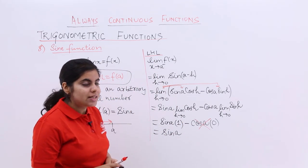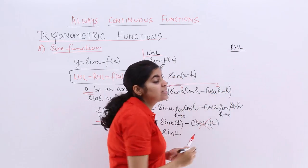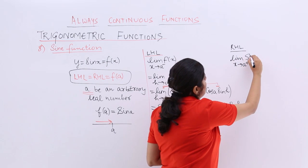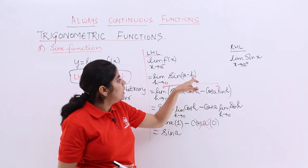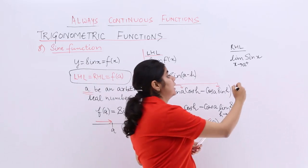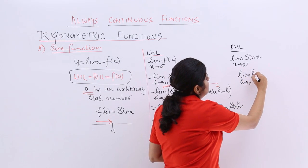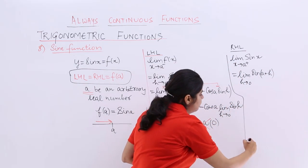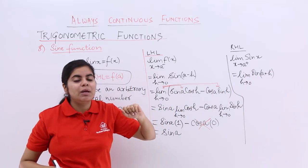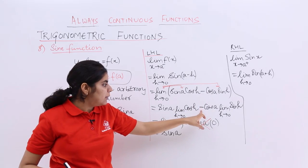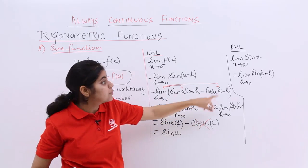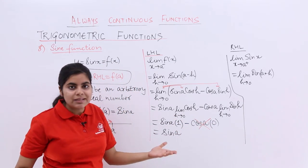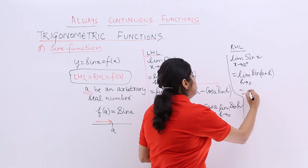So RHL would go the same. I'm not doing all the steps, I'm just telling you in RHL what will happen: limit x tends to a positive sine x, and then wherever you had sine(a minus h), you will be writing sine(a plus h). Now sine(a plus b) is sine a cos b plus cos a sine b. So wherever you had minus, here also it becomes plus, here also it becomes plus in case of right hand limit. Now plus will come here, plus will come here. Sine a plus 0 is sine a only. So again what you get is sine a as the answer.